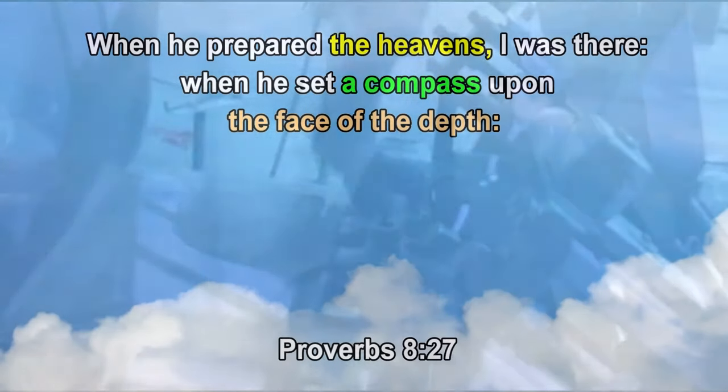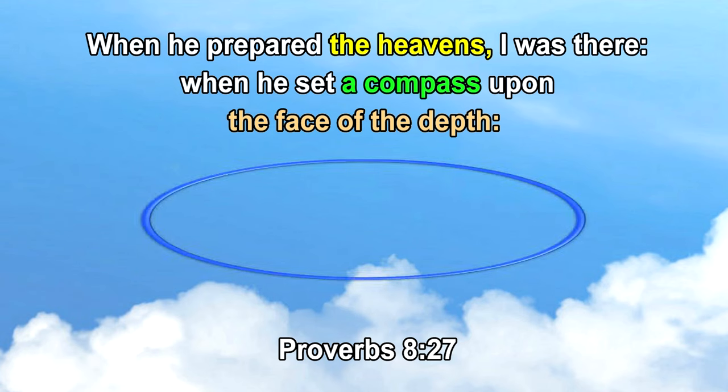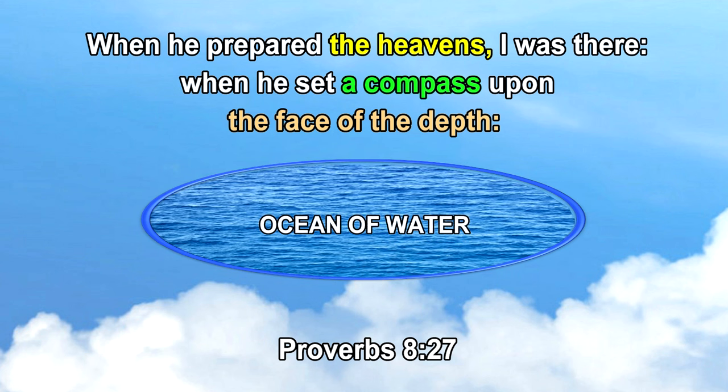This takes us back to our initial scripture. The word compass means a circle, a ring, or a circuit. And that circle is placed upon a specific area of the flat surface, or the face of the deep, which is the sea, the ocean of water. Putting this all together, it might look something like this.